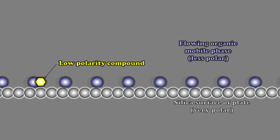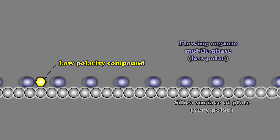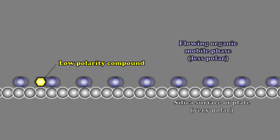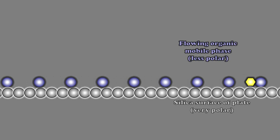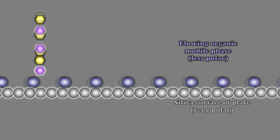Now let's change that. Let's instead add a low polarity compound. Remember the lower polarity compound spent a much greater deal of its time dissolved in the liquid phase and less of its time adhered to the silica. So when I release this low polarity compound and let nature take its course, let's see what happens. Notice it's moving much more rapidly across that stationary phase than its more polar counterpart did.